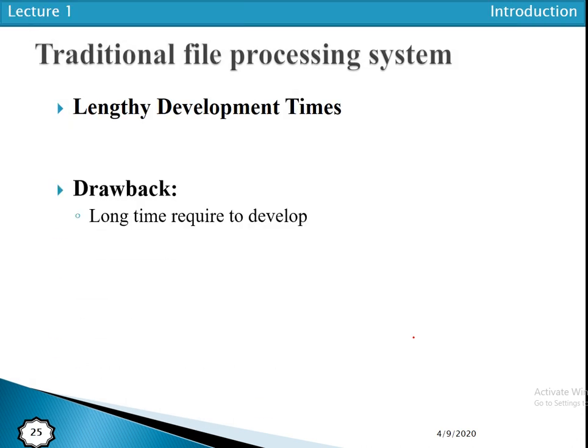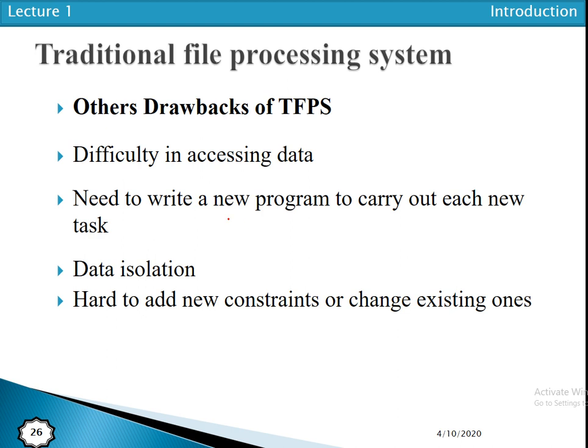Other drawbacks include no centralized control and lengthy development time, as already discussed. Additionally, it is difficult to access data — collecting or filtering information becomes very difficult and requires writing new programs for each new task. Data isolation is another issue, as multiple files in different formats make it very hard to apply new constraints. These are the drawbacks of the traditional file processing system, which will help us understand the concept of the database approach and its advantages.